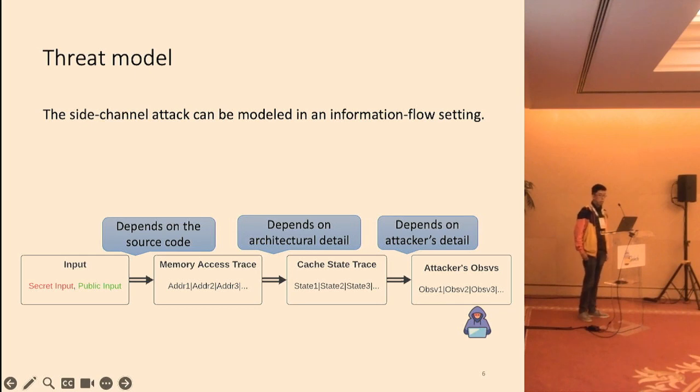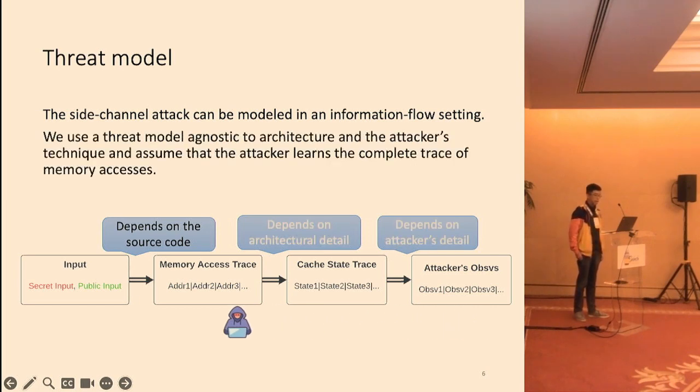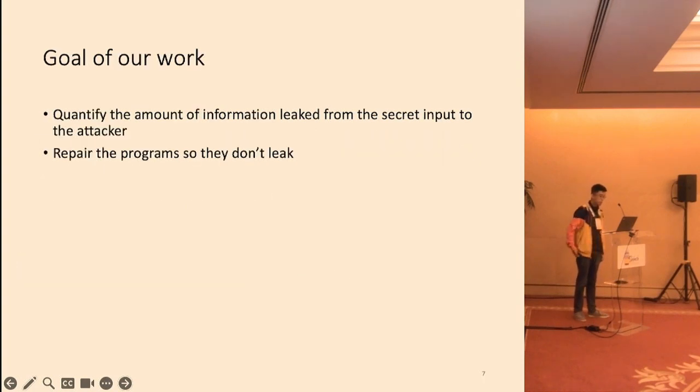The side-channel attack can be modeled in an information flow setting. The input, consisting of both secret input and public input, induces a memory access trace, which further induces a series of cache states, which further induces a series of observations by the attacker. To generalize the threat model, we make it agnostic to architecture and attacker's detail, and assume that attacker sees the complete trace of memory accesses. And as it's common in security research, we also assume that attacker knows the source code.